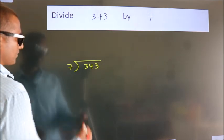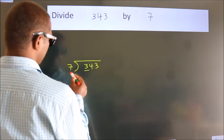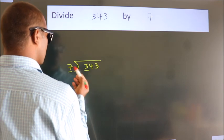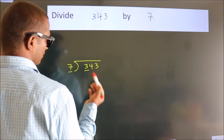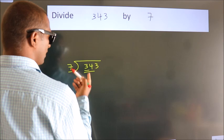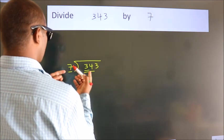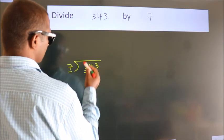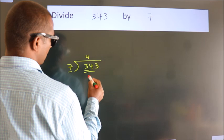Next. Here we have 3, here 7. 3 smaller than 7. So we should take 2 numbers, 34. A number close to 34 in 7 table is 7 fours, 28.